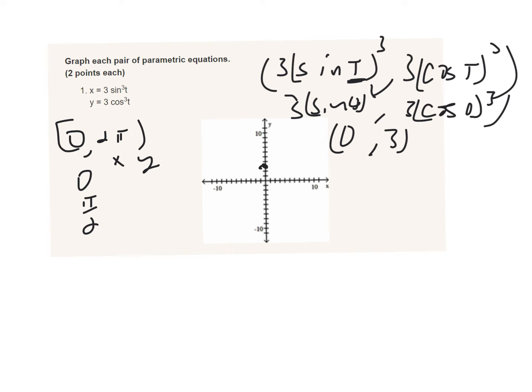And then y will be cosine of pi over two is zero. So that's three, zero. So one, two, three.